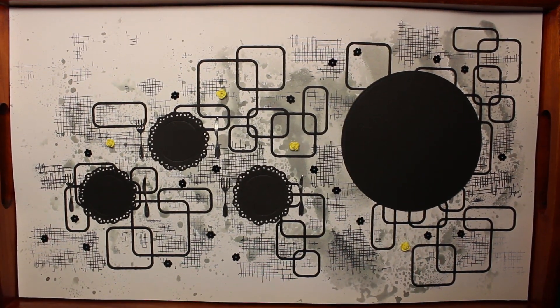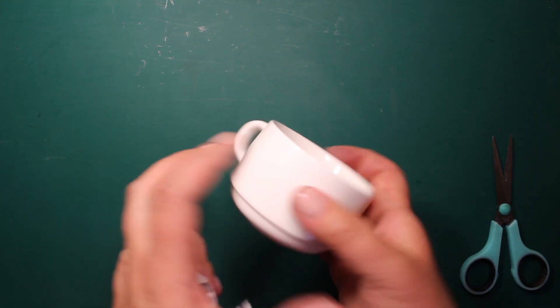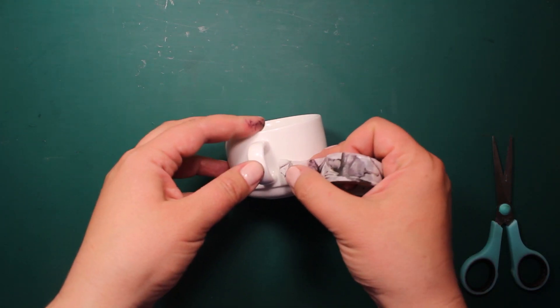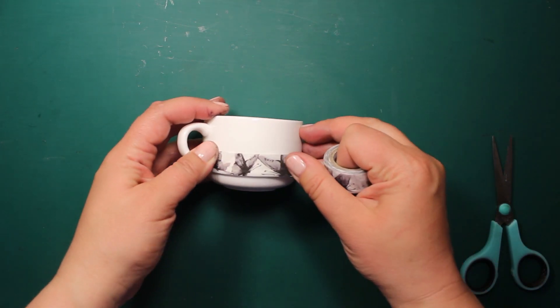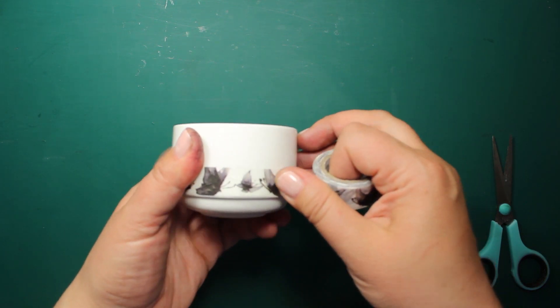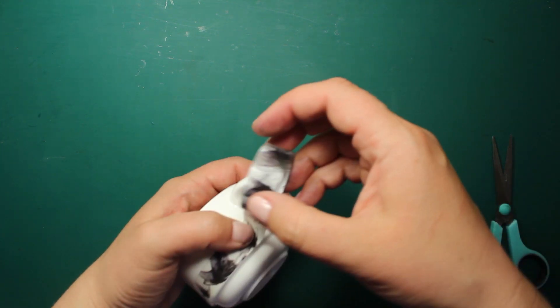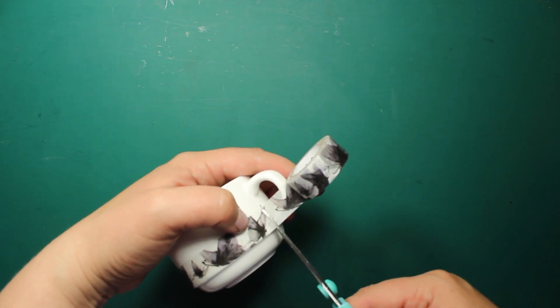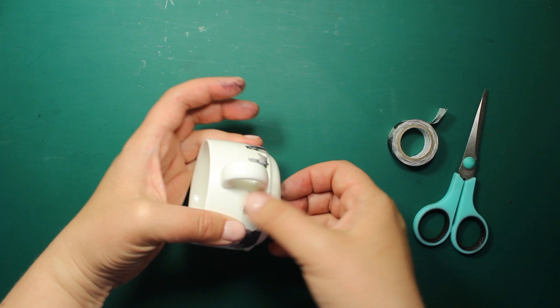Before I place all the real food elements onto the layout I'm going to decorate this coffee cup. So I'm sticking a strip of black and white washi tape around it. A nice thing about washi tape is that I can easily remove it whenever I want to and it will leave no sticky residue.